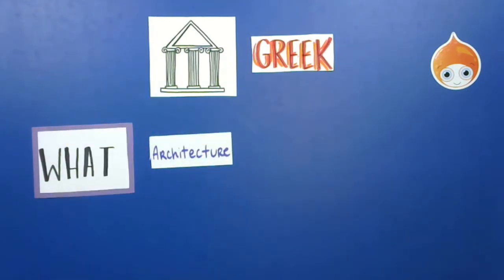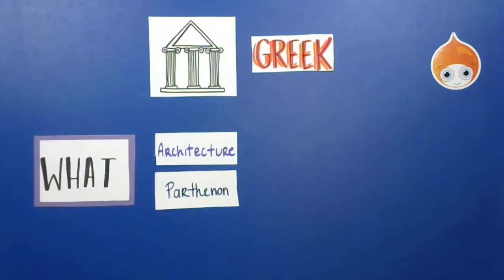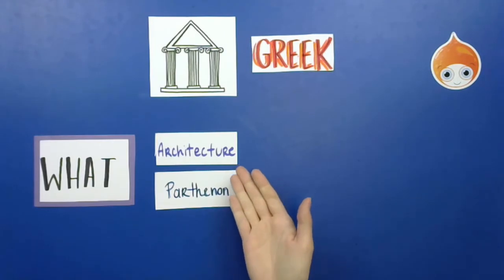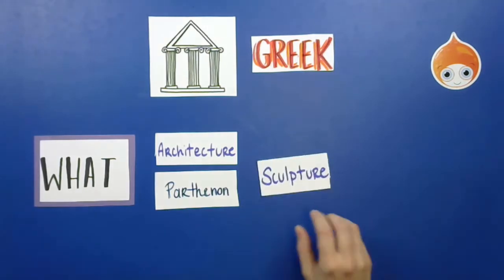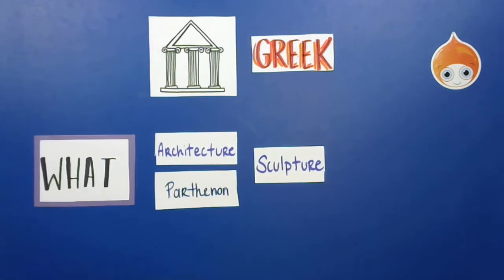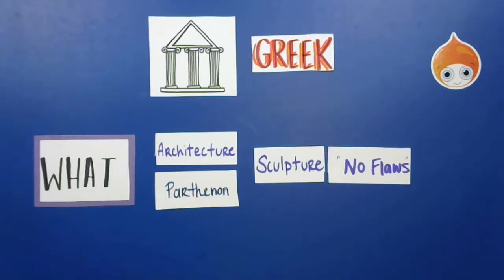Architecture refers to buildings. One very famous building is the Parthenon — that's actually Athena's temple, the building they created for her. A question I'd ask: what is one famous piece of architecture made by the Greeks? You would say the Parthenon. A bonus question might be: who was this building built for? And you could say Athena. The next thing is sculpture, which is very important to the Greek people. Their sculpture showed no flaws — they didn't want to show the flaws of people. They wanted them to look perfect.